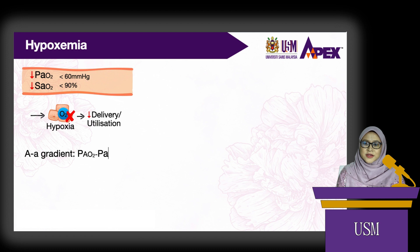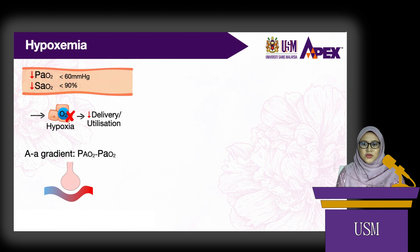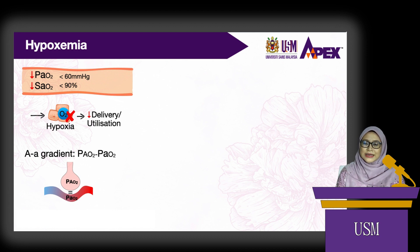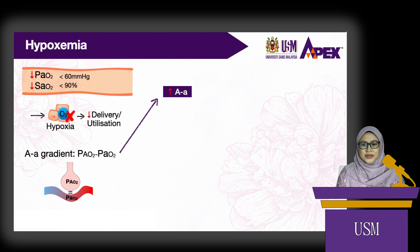The A-a gradient is the difference between the alveolar pressure of oxygen and the arterial pressure of oxygen. Normally, oxygen pressure equilibrates across the alveolar-pulmonary capillary barrier, and the A-a gradient is close to zero. In some cases of hypoxemia, the A-a gradient can be increased.